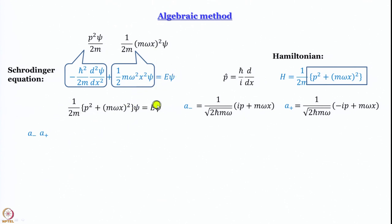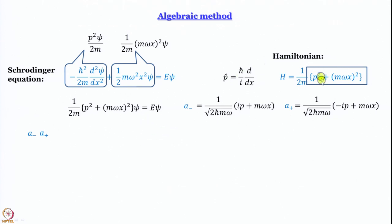This gave us the modified Schrödinger equation: 1/2m · (p² + (mωx)²) acting on ψ equals E·ψ, and the Hamiltonian is H = 1/2m · (p² + (mωx)²).